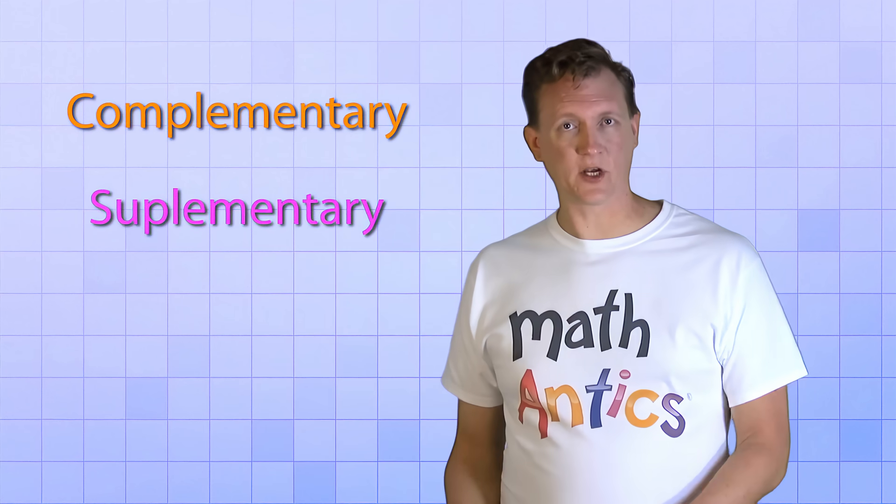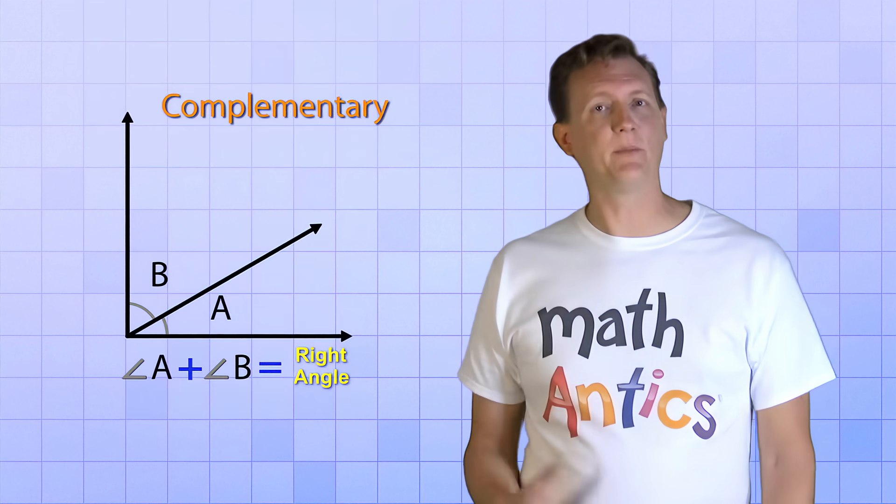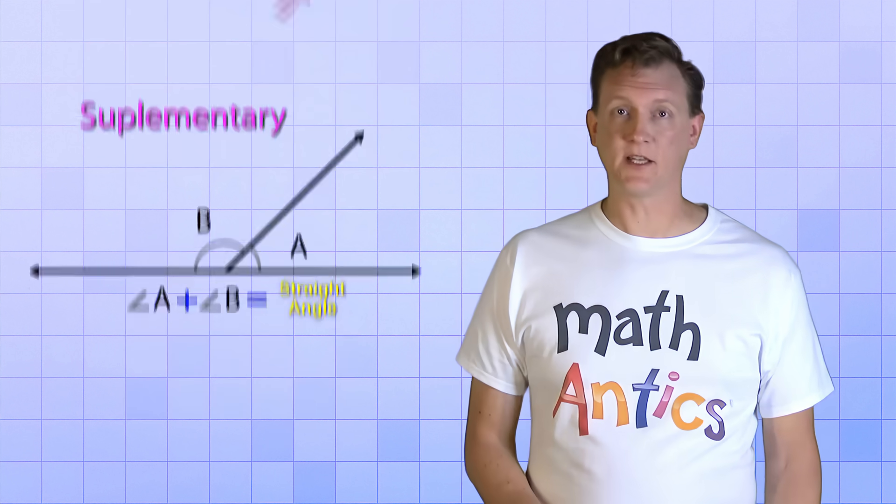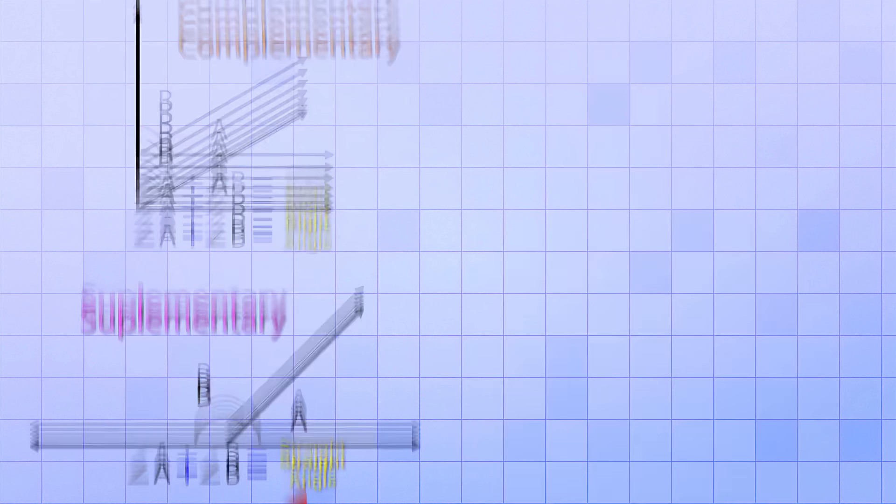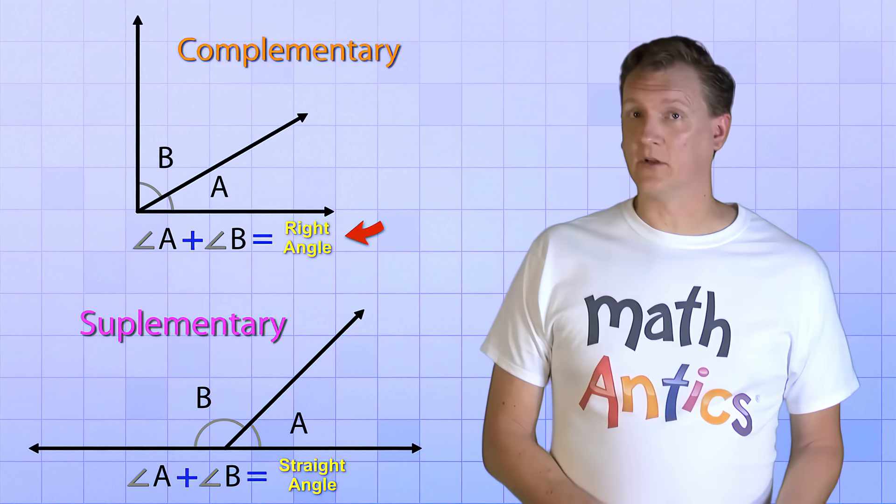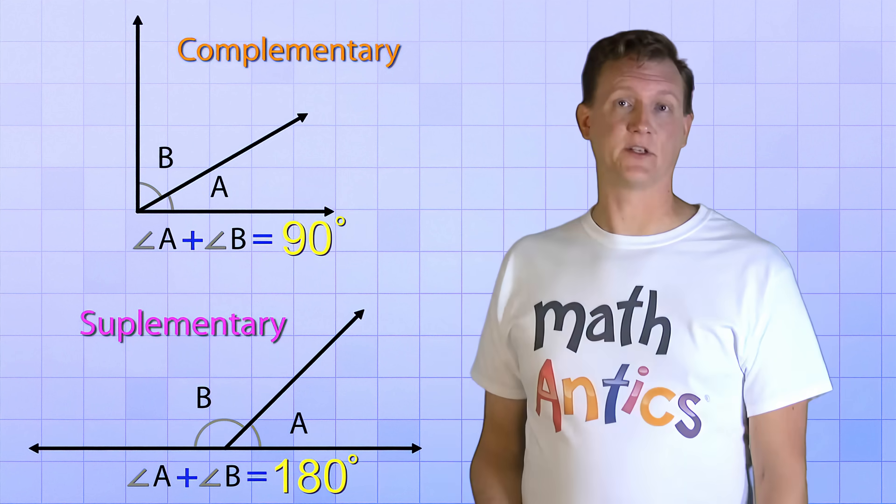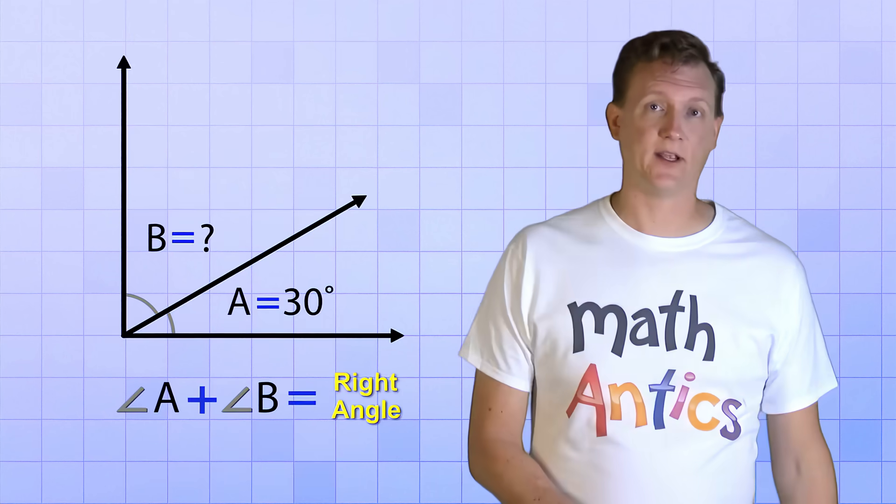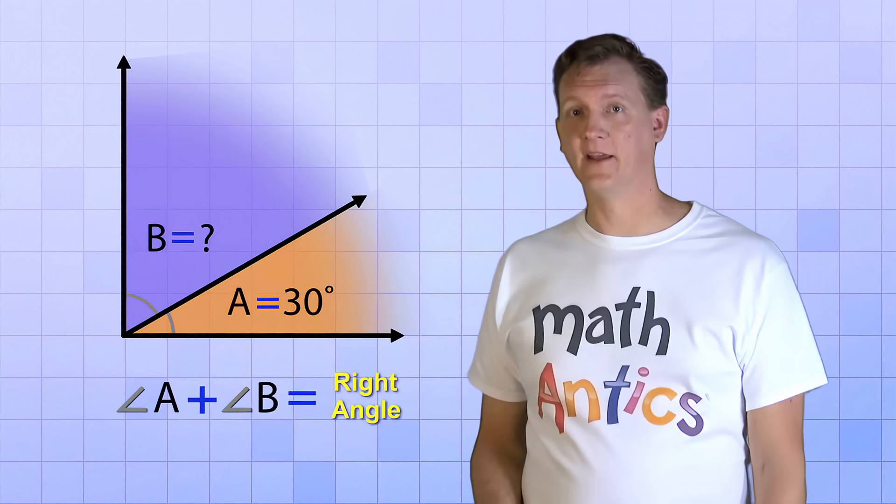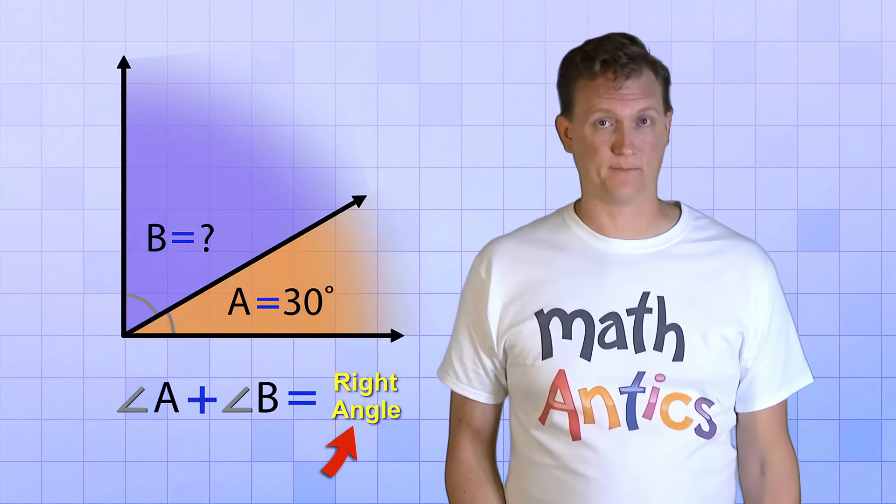Alright, there's one more thing I want to teach you in this video because you'll probably see this kind of geometry problem on your homework or tests. Do you remember what complementary and supplementary angles are from the last video? Complementary angles combine to form a right angle and supplementary angles combine to form a straight angle. Well, now that we know that a right angle is 90 degrees and a straight angle is 180 degrees, we can use that information to solve problems that have unknown angles, like this one. It shows two angles, angle A and angle B, that combine to form a right angle. The problem tells us that angle A is 30 degrees and it wants us to figure out what angle B is.